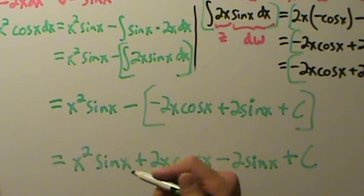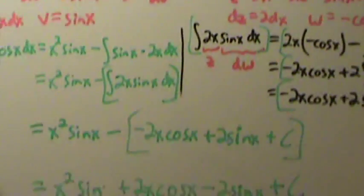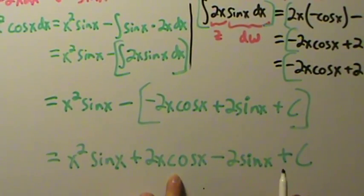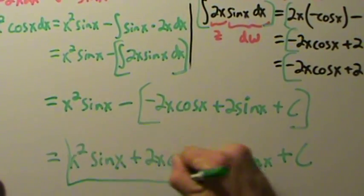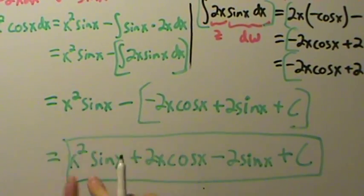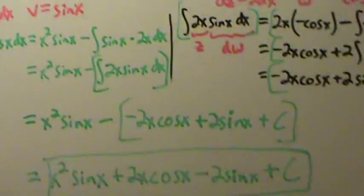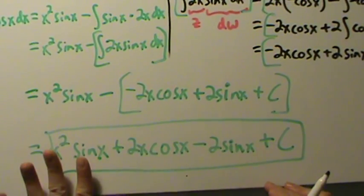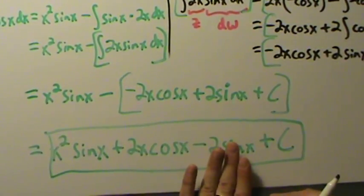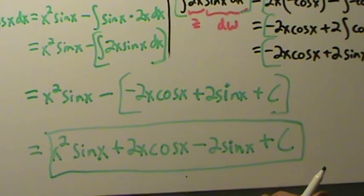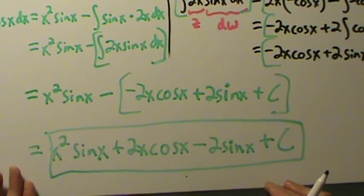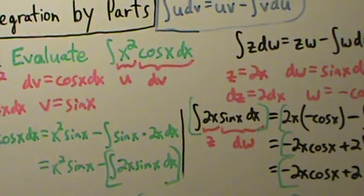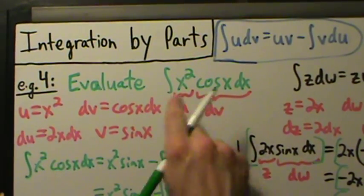So that's the answer to example four. The integral of x squared cosine of x dx equals x squared sine of x plus 2x cosine of x minus 2 sine x plus c. We could verify this by taking the derivative of the result and confirming we get back x squared cosine of x. This was an example of using integration by parts twice to evaluate an integral.